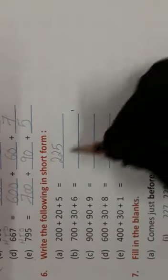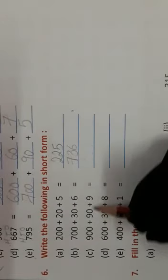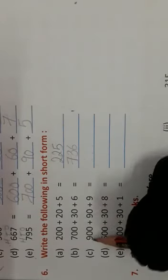First is 200 plus 20 plus 5, it's 225. The next number is 700 plus 30 plus 6, it's 736. Nine hundred plus 90 plus 9, that's 999.